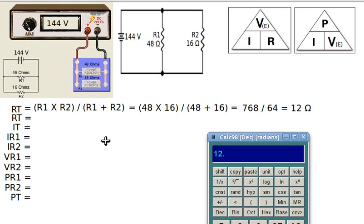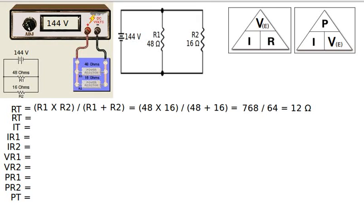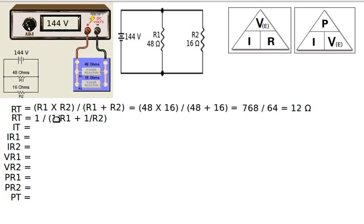The other formula I could use is called the reciprocal formula. The reciprocal formula is 1 divided by the quantity 1 over R1 plus 1 over R2. That would give us the same values.